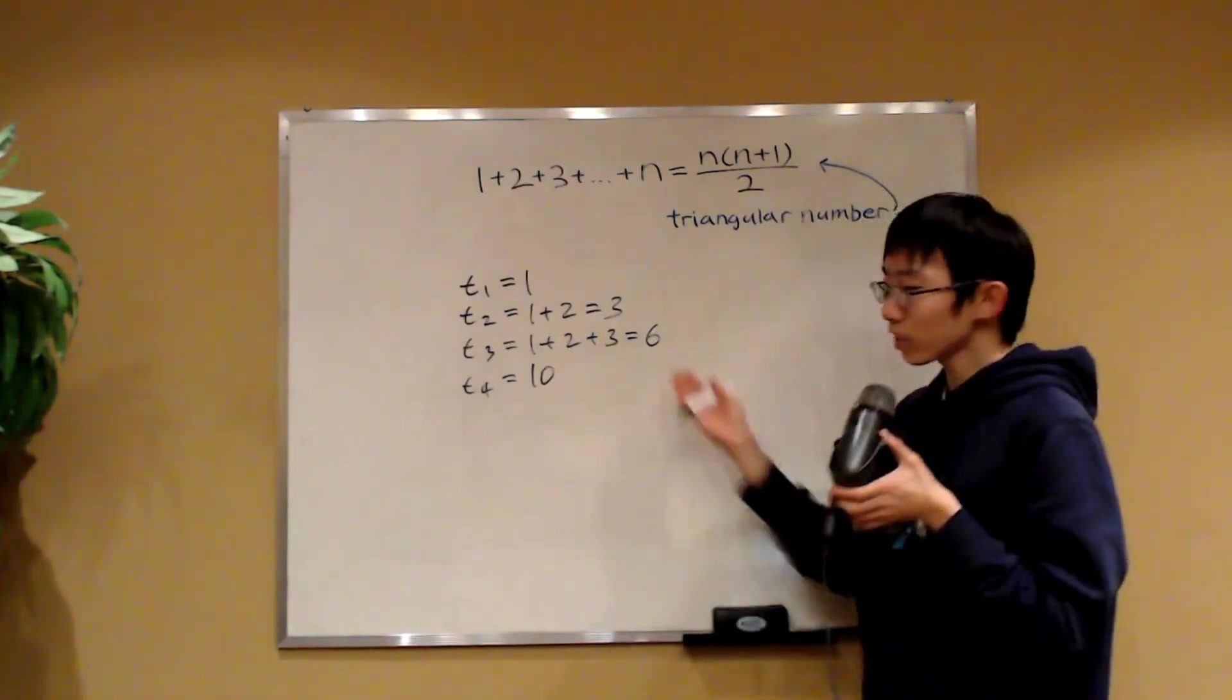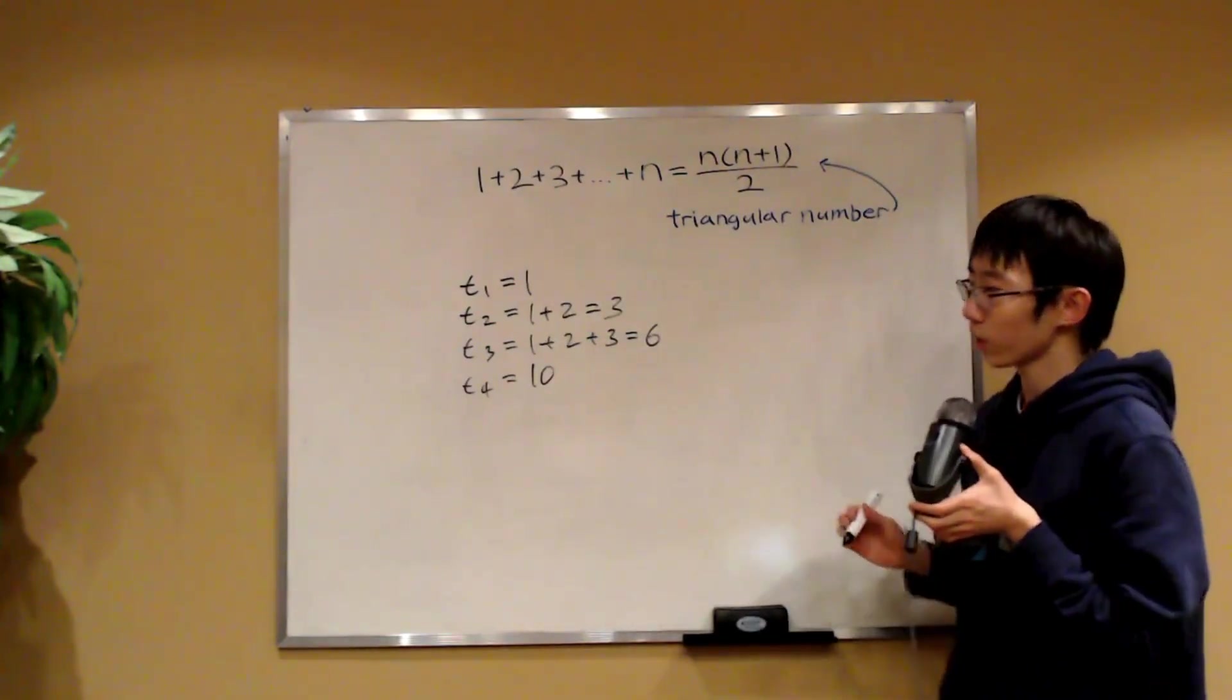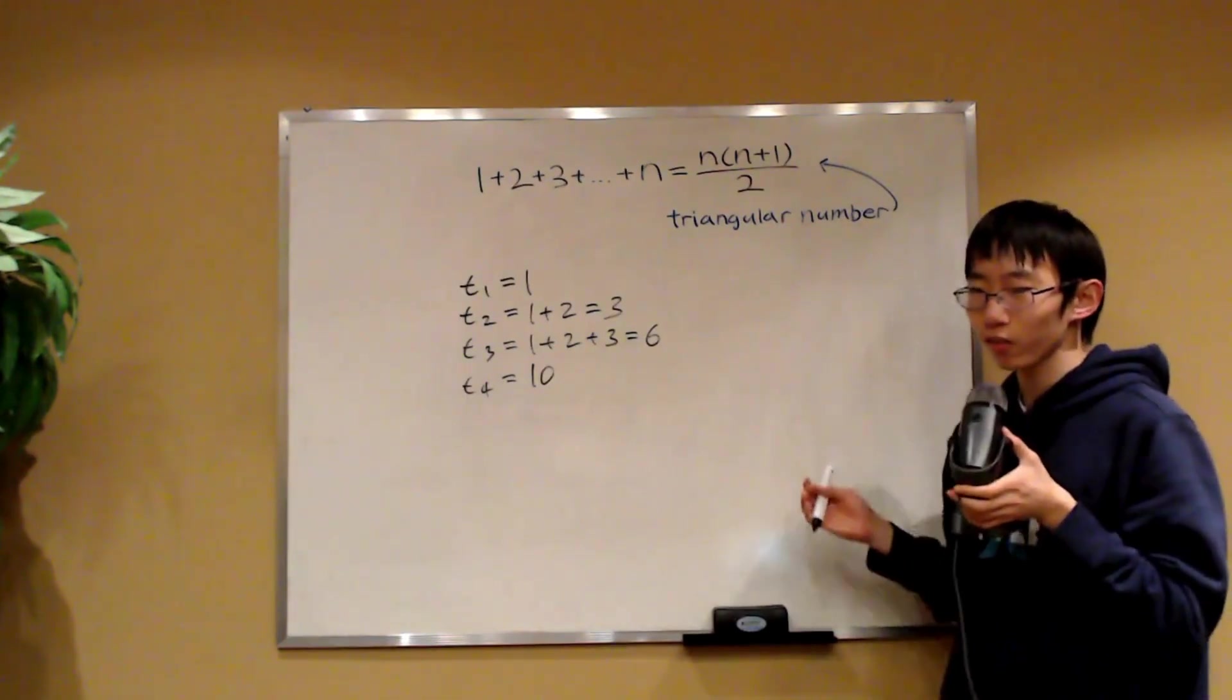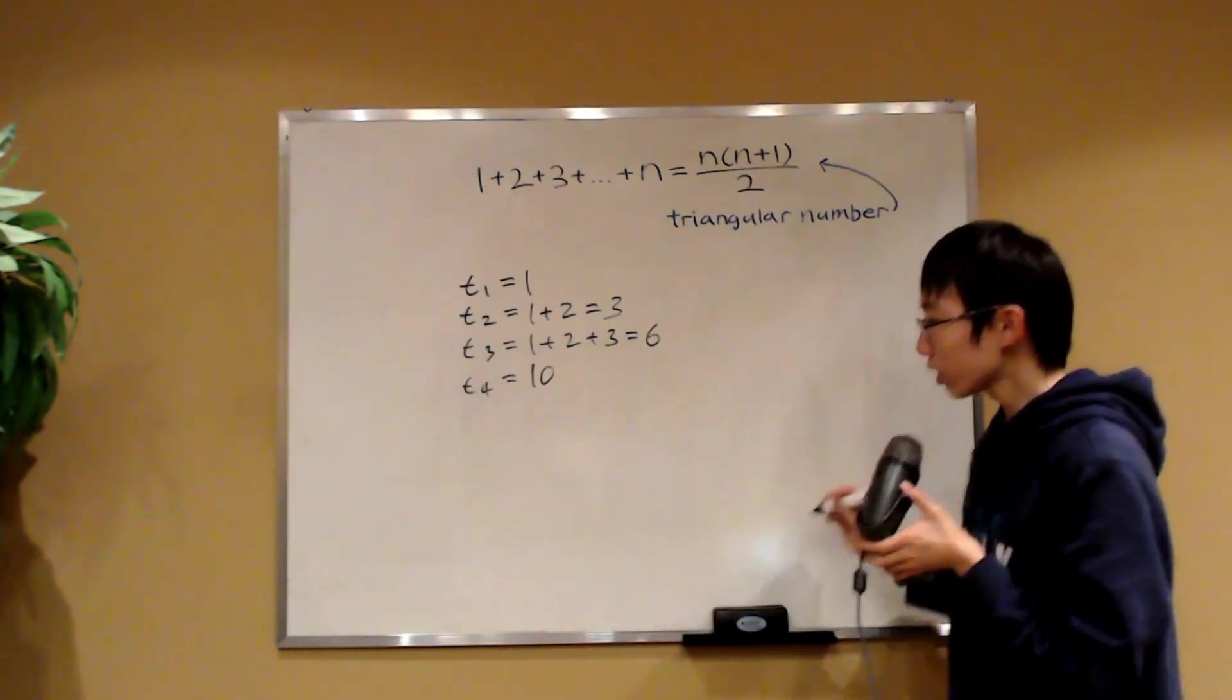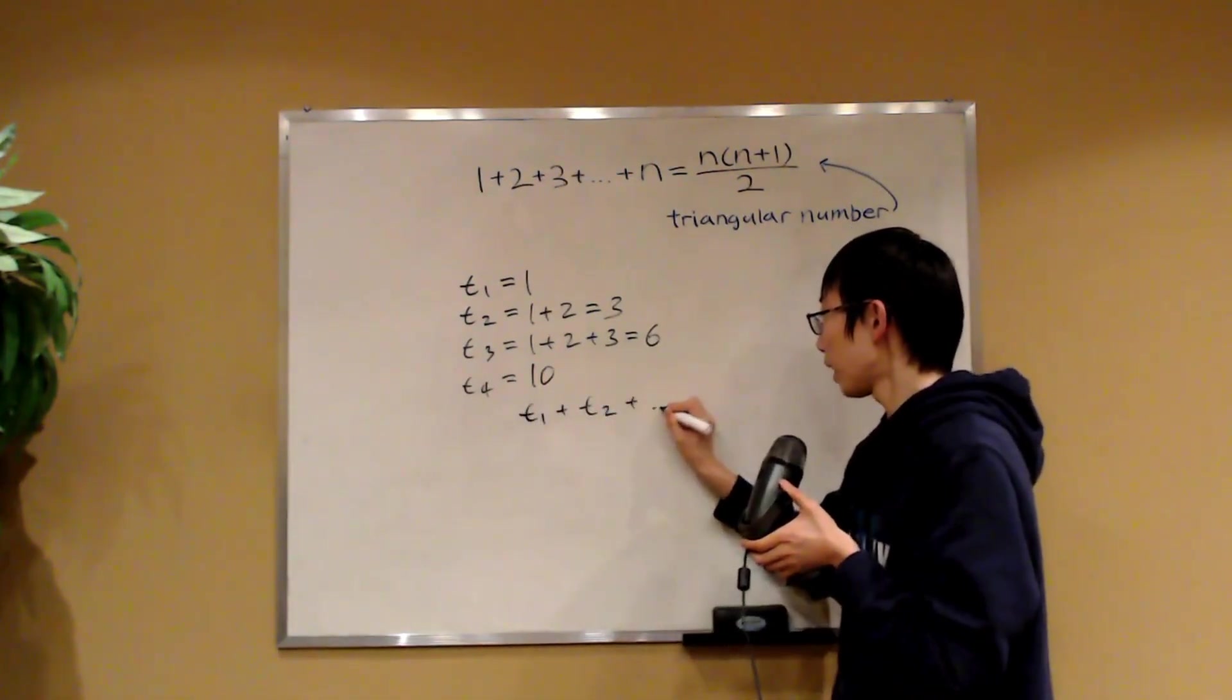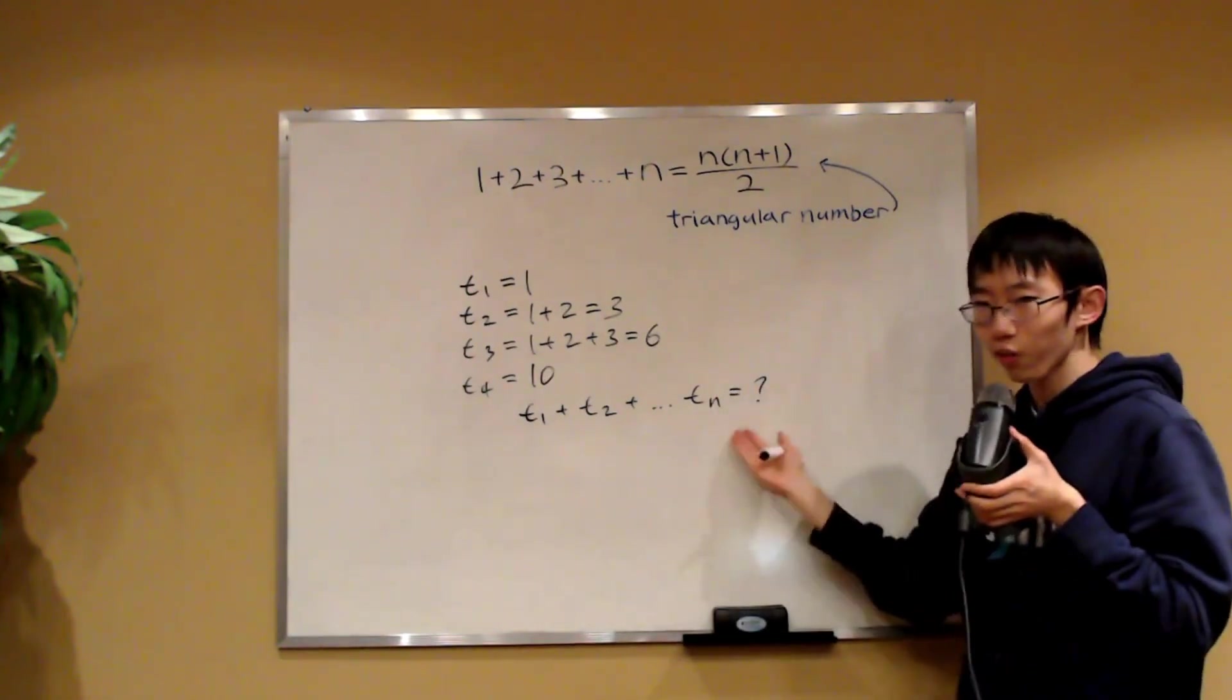So that's neat. We have a sequence of numbers, and we can calculate, say, the 100th triangular number whenever we want with this nice little formula. However, have you ever considered what is the sum of the first n triangular numbers? Is there a formula for this?